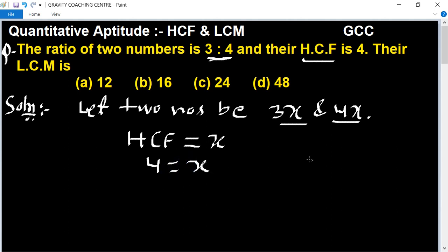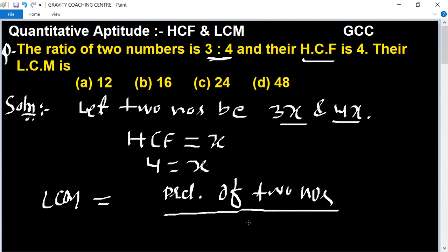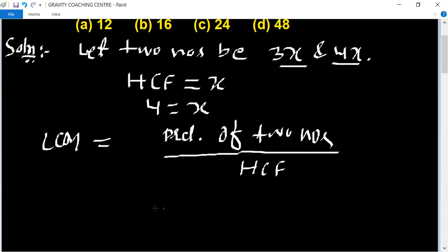So x equals four. And we know that the formula of LCM equals product of two numbers upon HCF. So LCM equals the product of two numbers, 3x into 4x, upon HCF.